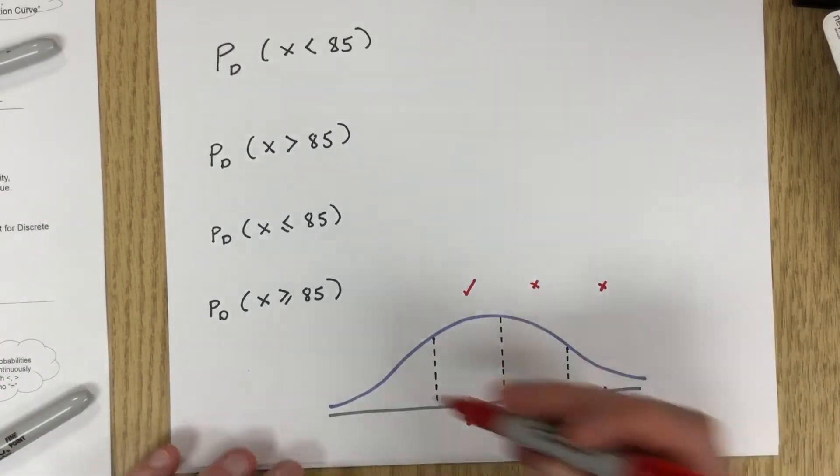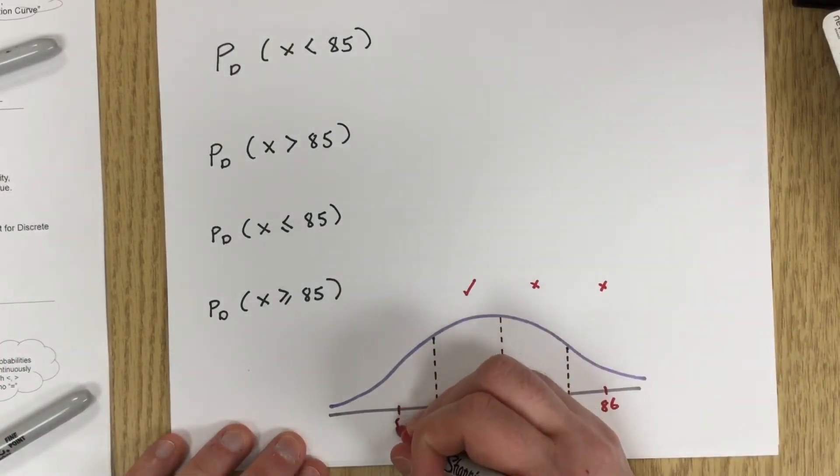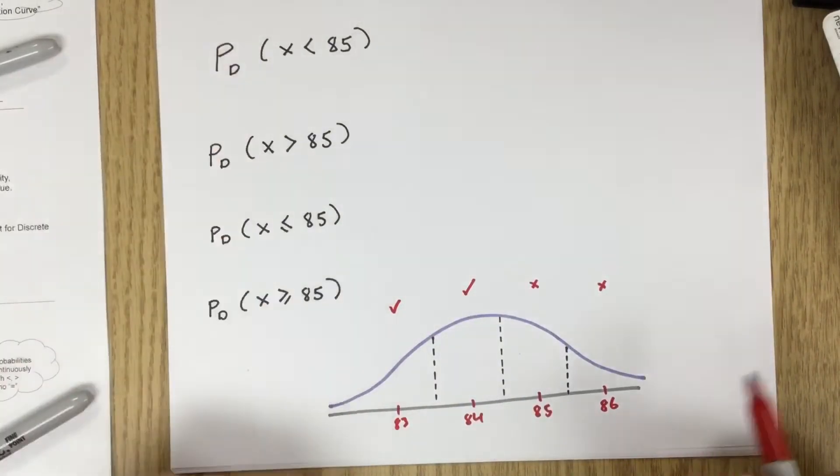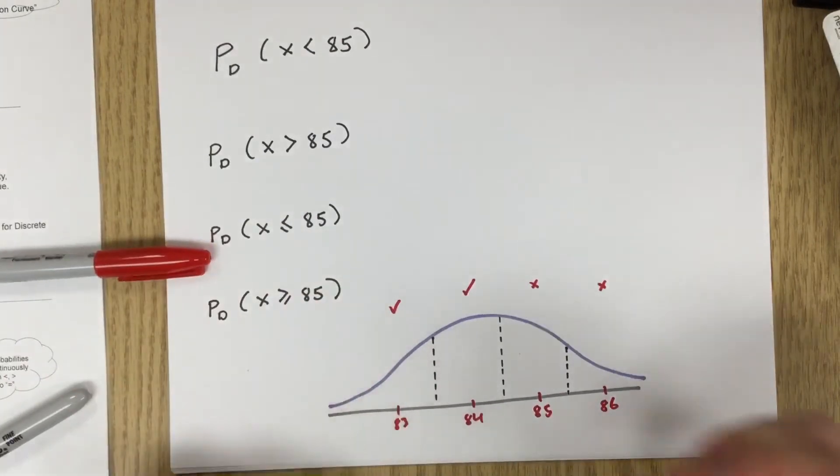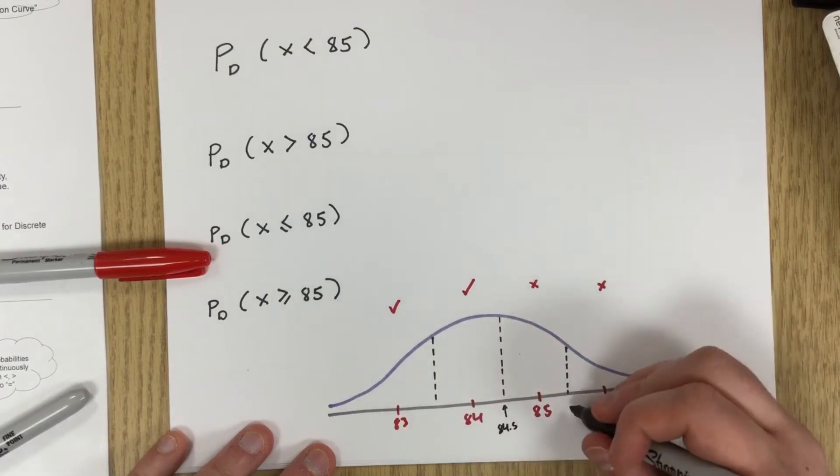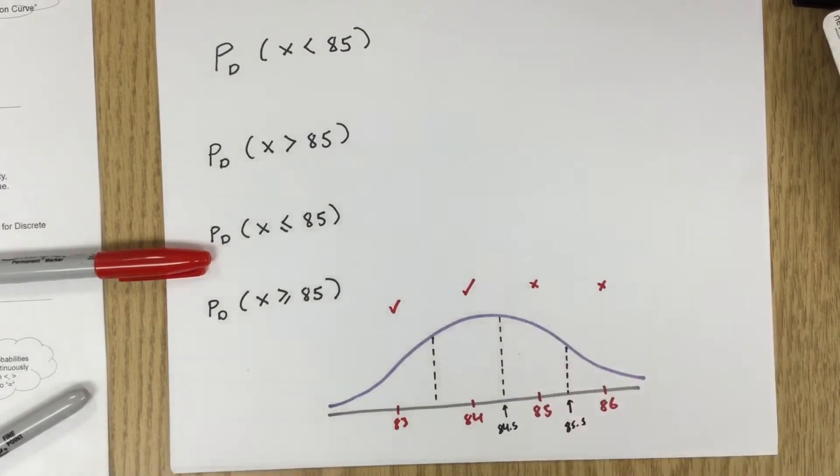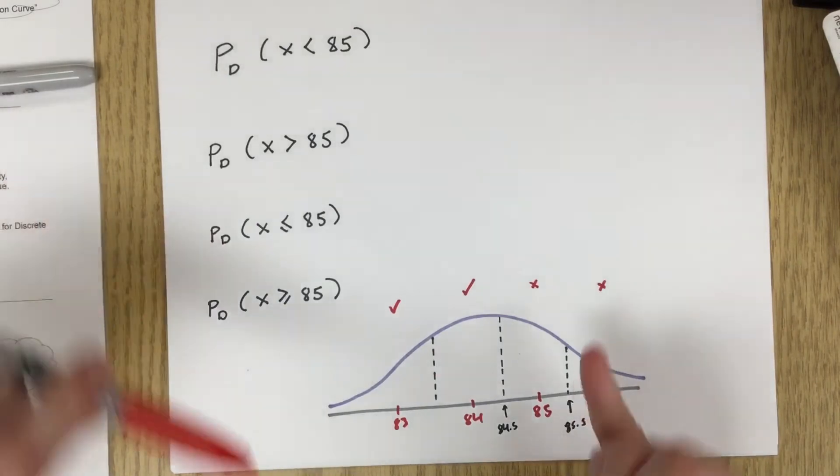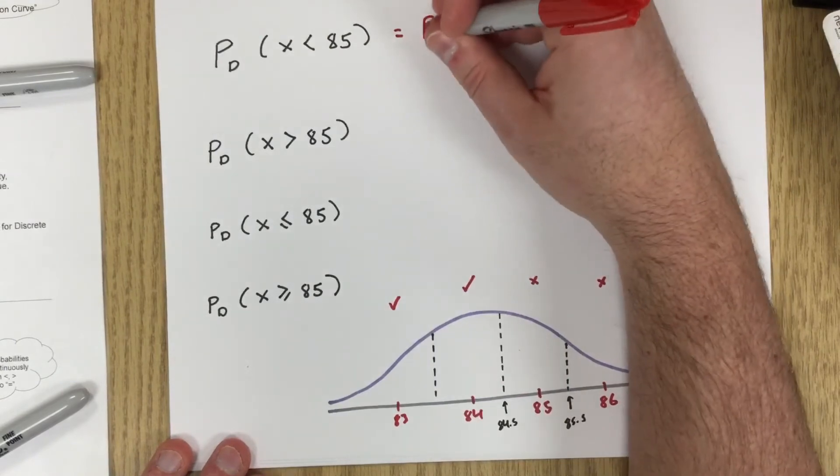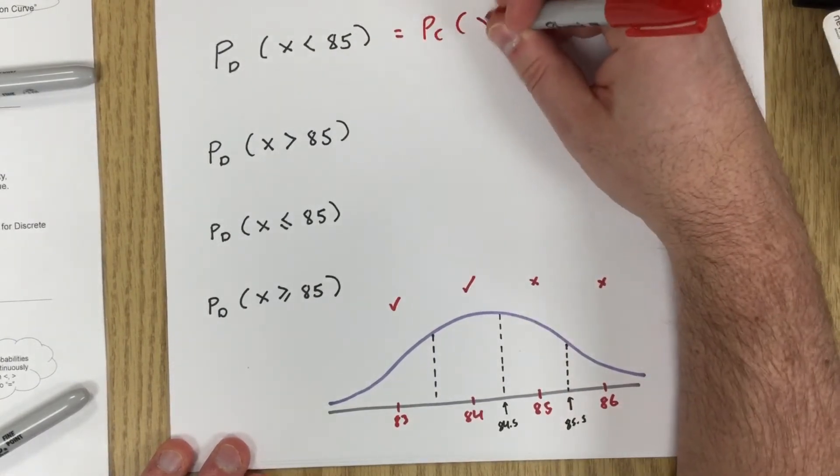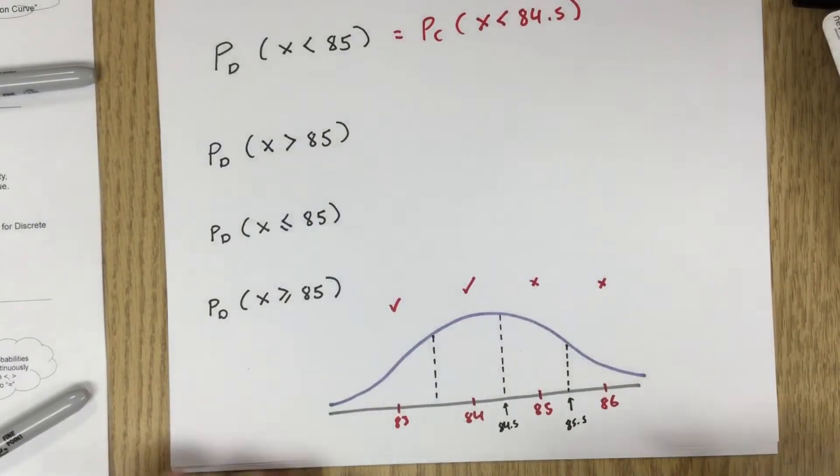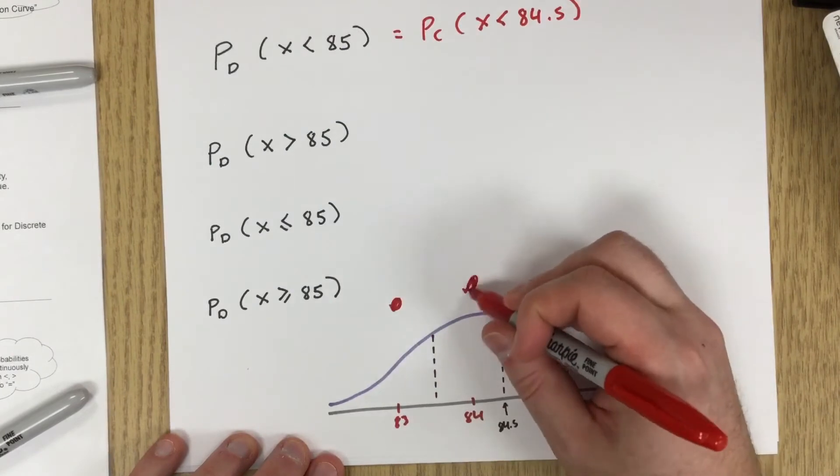Does the 83 column count? It does. So for x is less than 85, we are going to be starting over here, which is 84.5. So it's going to be there or less. So if we do the continuity correction, that's going to be the same thing as x is less than 84.5.